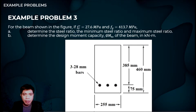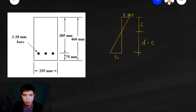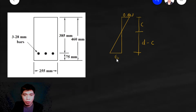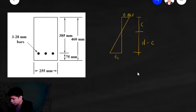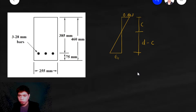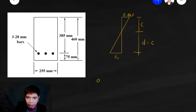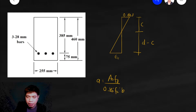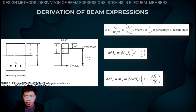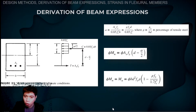The next question asks us to determine the design moment capacity φMn of the beam. To compute φMn, we first need to find the tension strain to determine φ. We use the formula A = AS·F_Y / (0.85·F sub C prime·B). Either this formula or the one using ρ can be used since both ρ and AS have already been computed.